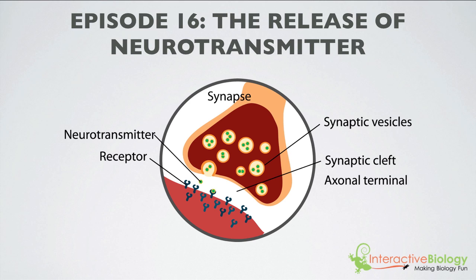Another term you need to know would be the synaptic vesicles. And you can see there are a number of vesicles in here. What's unique about these vesicles is that inside of those vesicles, we have neurotransmitters. And you can see examples of neurotransmitters here. This is a neurotransmitter. And we have three in here, three in here, two in here, one in here. These are all neurotransmitters.